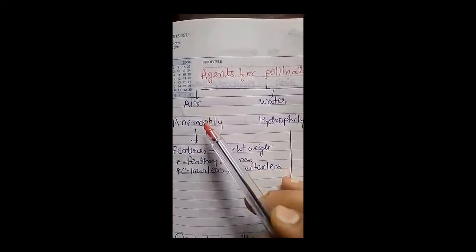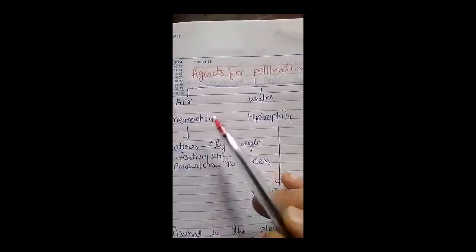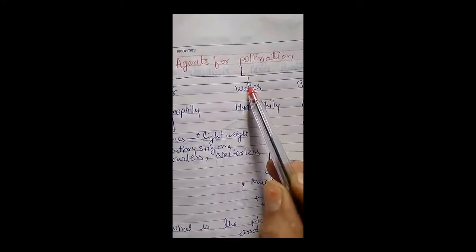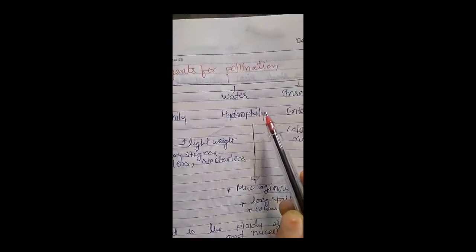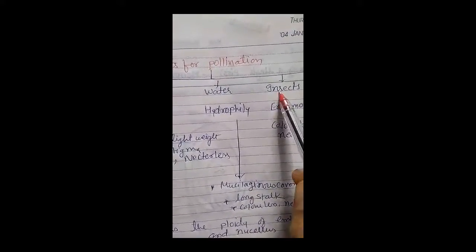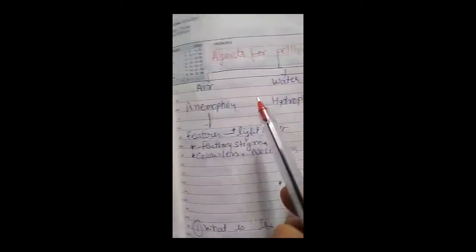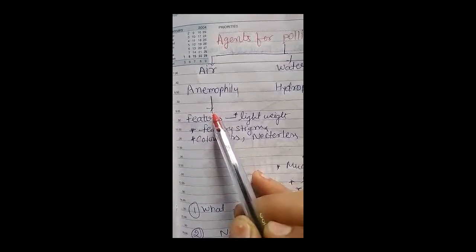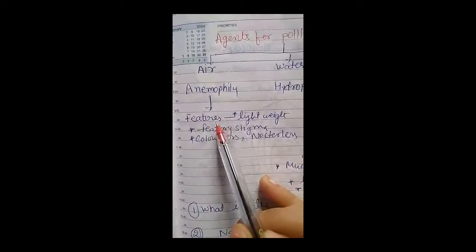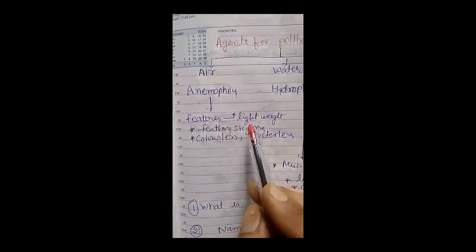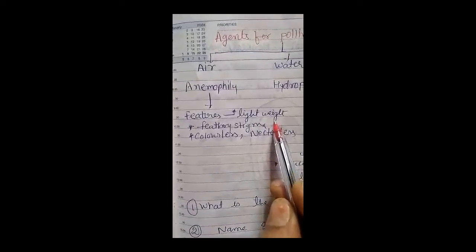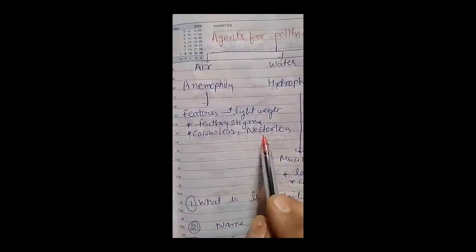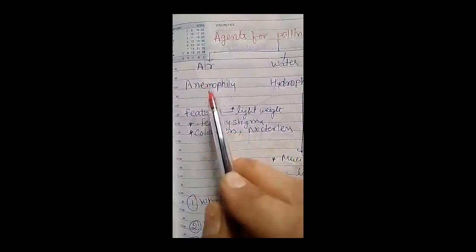The type of pollination in which air is the agent is known as anemophily. Anemophilous flowers, in which pollination takes place by air, have special features: lightweight pollen grains, large number of pollen grains, and feathery stigma. The flowers are colorless and nectarless, because no insects are needed — pollen grains are transferred by air.